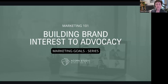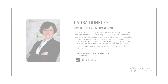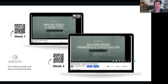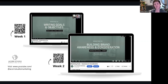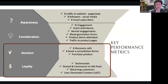Let's get started. Building Brand Interest to Advocacy is part of our Marketing Goals series. Writing Goals and Objectives was our first one — if you've missed it, the QR code is there. That's a general overview of goals and objectives. Last week was Building Brand Awareness and Consideration, the top of the funnel. And this is the overview with some KPIs.